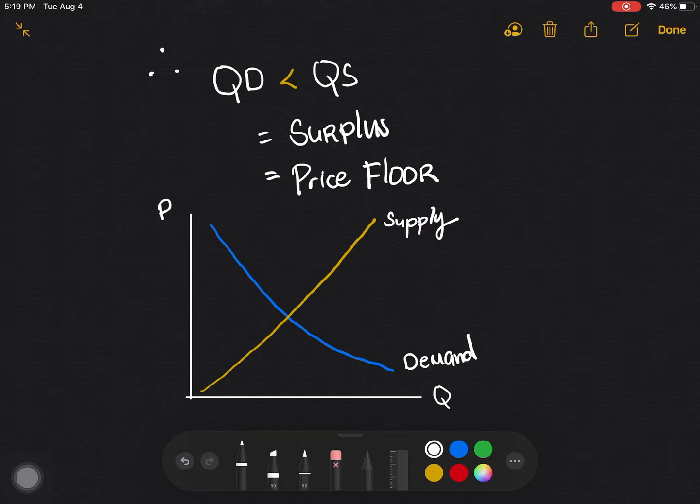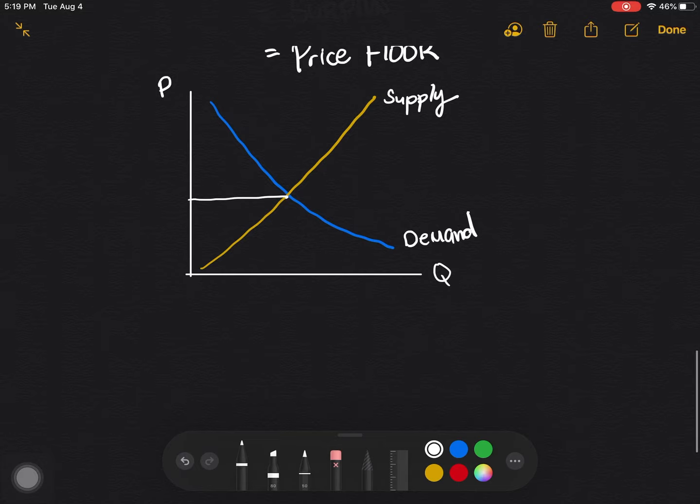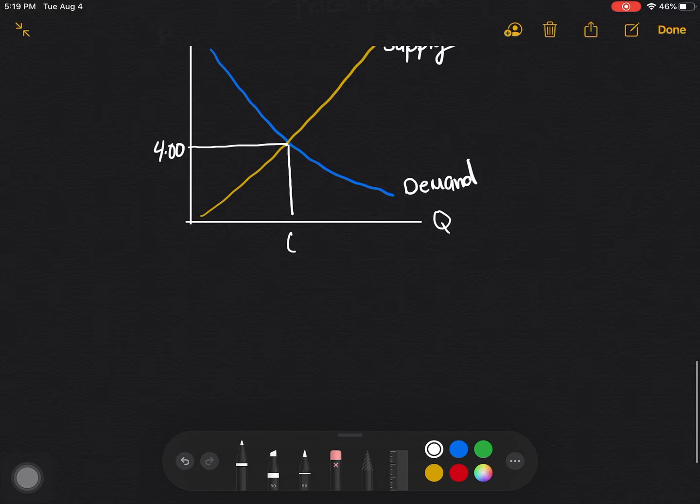So without any government intervention, we know that the price, as we have computed it already, the price is at 4 pesos. And the equilibrium quantity or the quantity star is actually 6 units.